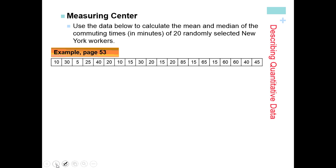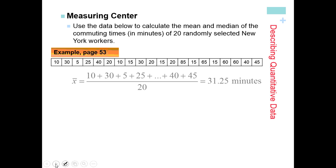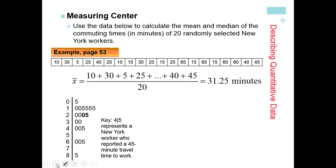Here we have 20 randomly selected New York workers and how long it takes them to commute in minutes to work. This is on page 53. Here's the mean — remember the symbol is x-bar. We add them up, divide by 20, and get 31.25 minutes.